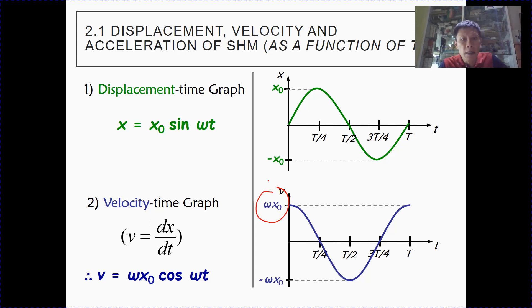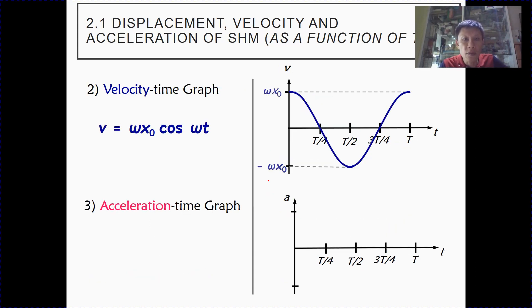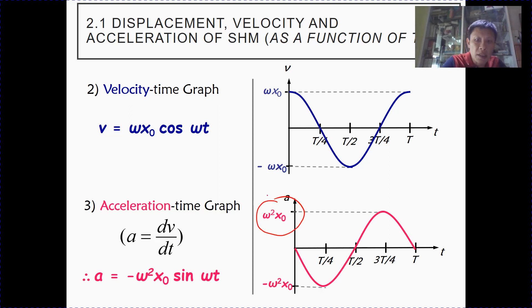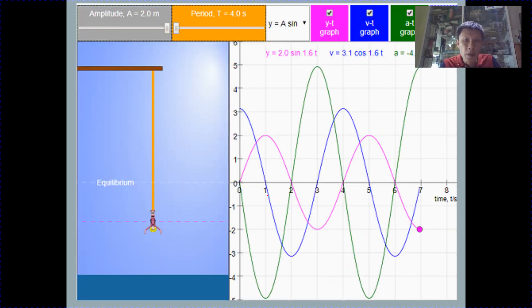And similarly, if you want to get the acceleration time graph, you just have to differentiate the velocity time graph. So by differentiating a cosine graph, you get a minus sine graph with amplitude of omega squared x0. So by inspecting all these three equations on your lecture notes, or you can go back to the SLS and look at the various simulation. You can see that these are the three graphs put onto one axis. The pink graph is your displacement time graph. The blue graph is your velocity time graph. And the acceleration time graph is labeled as green, the green line.